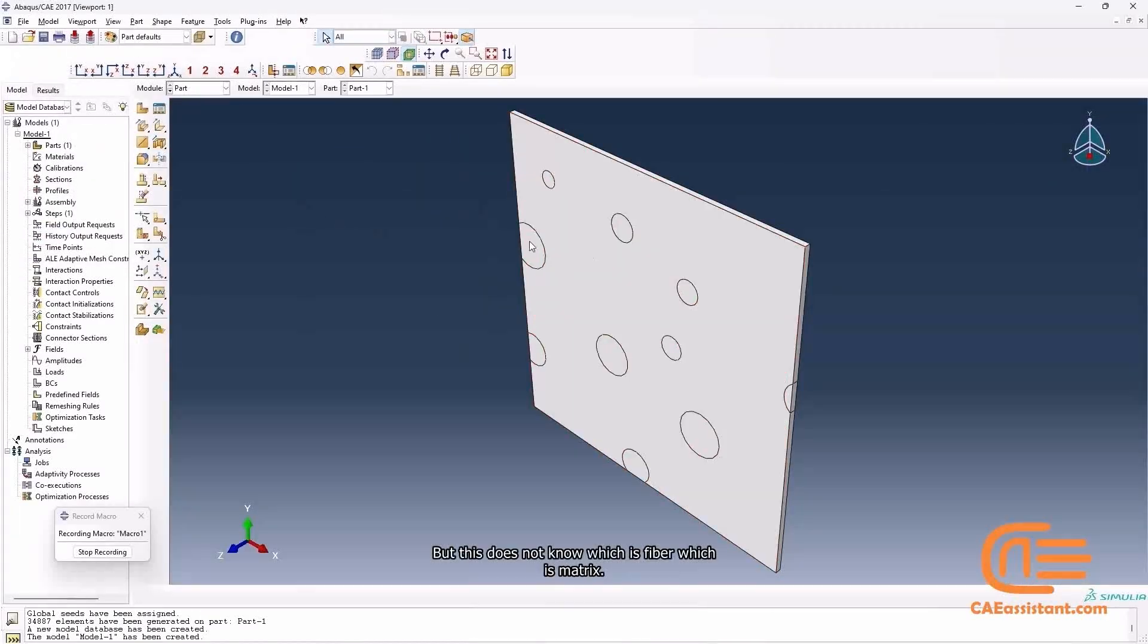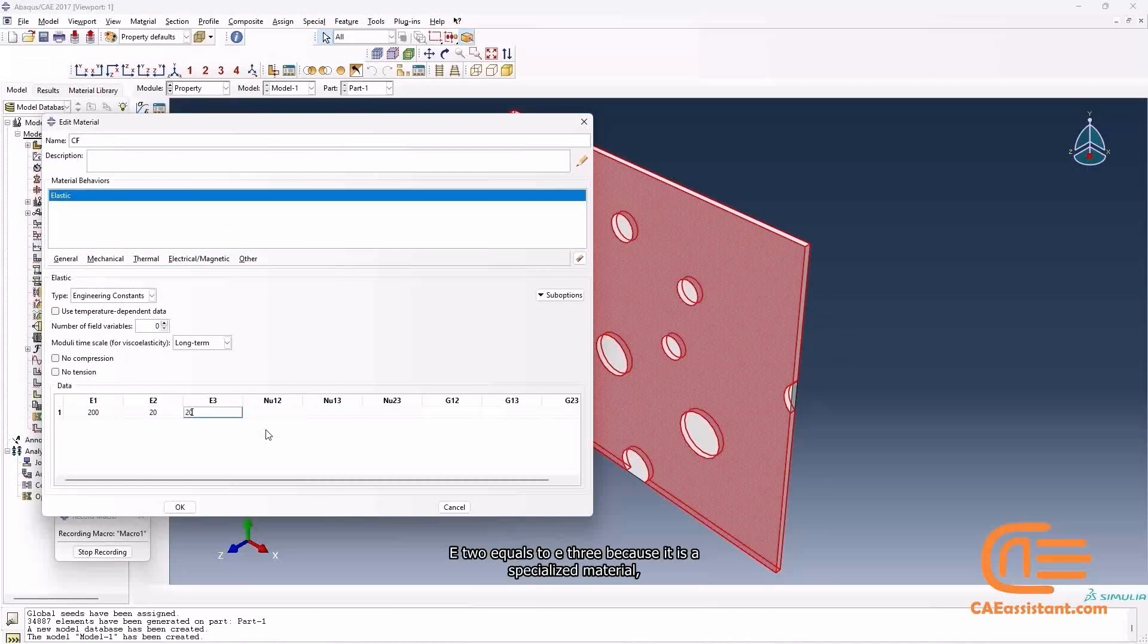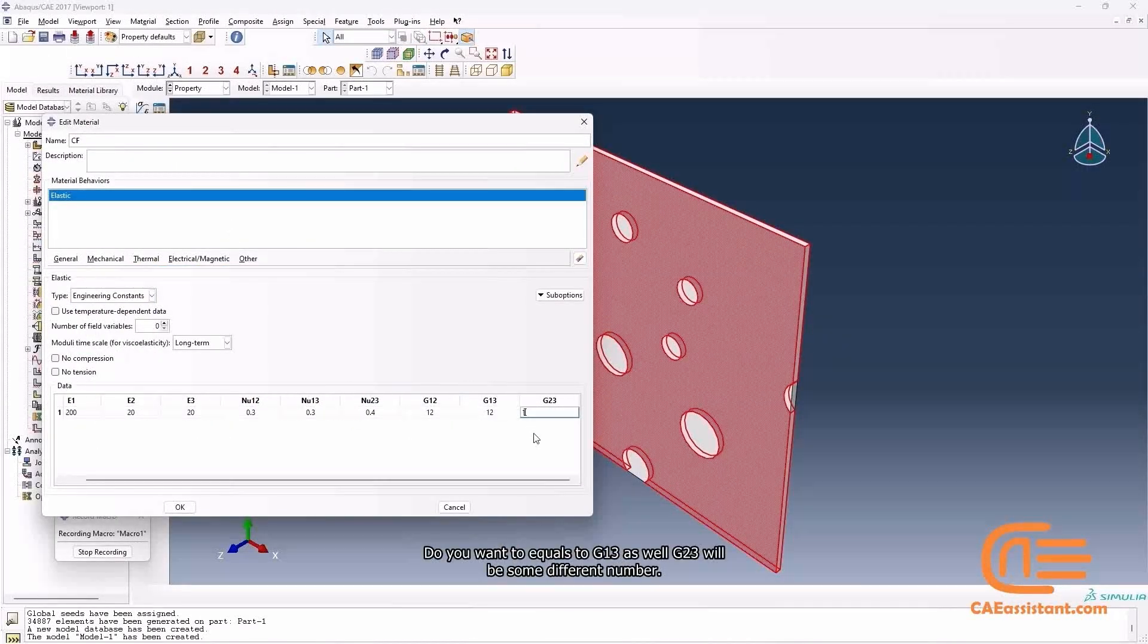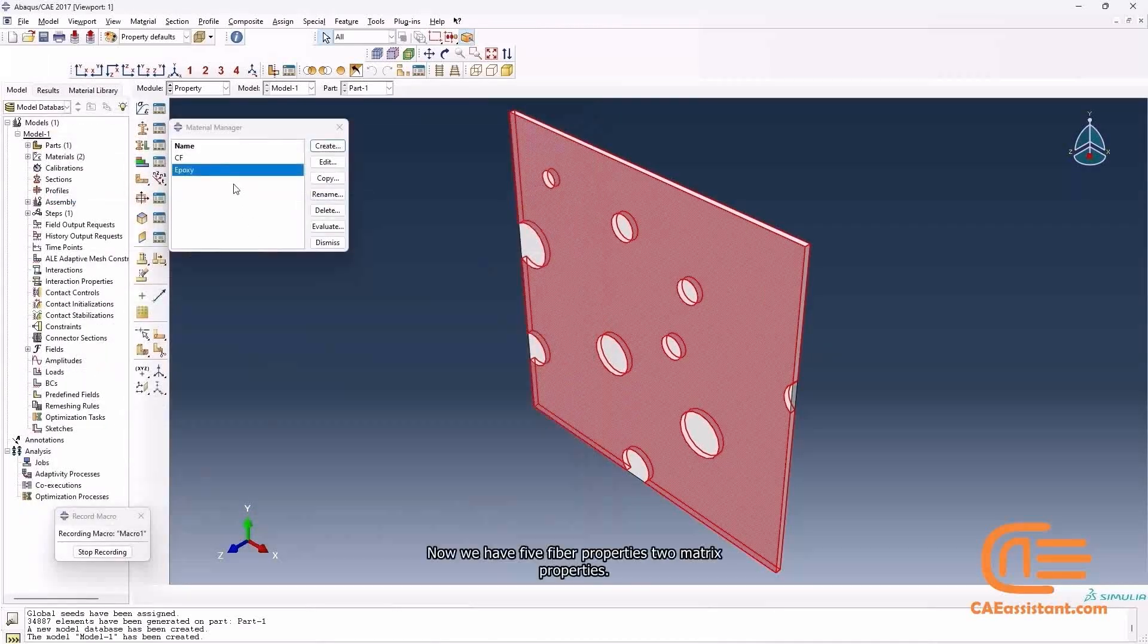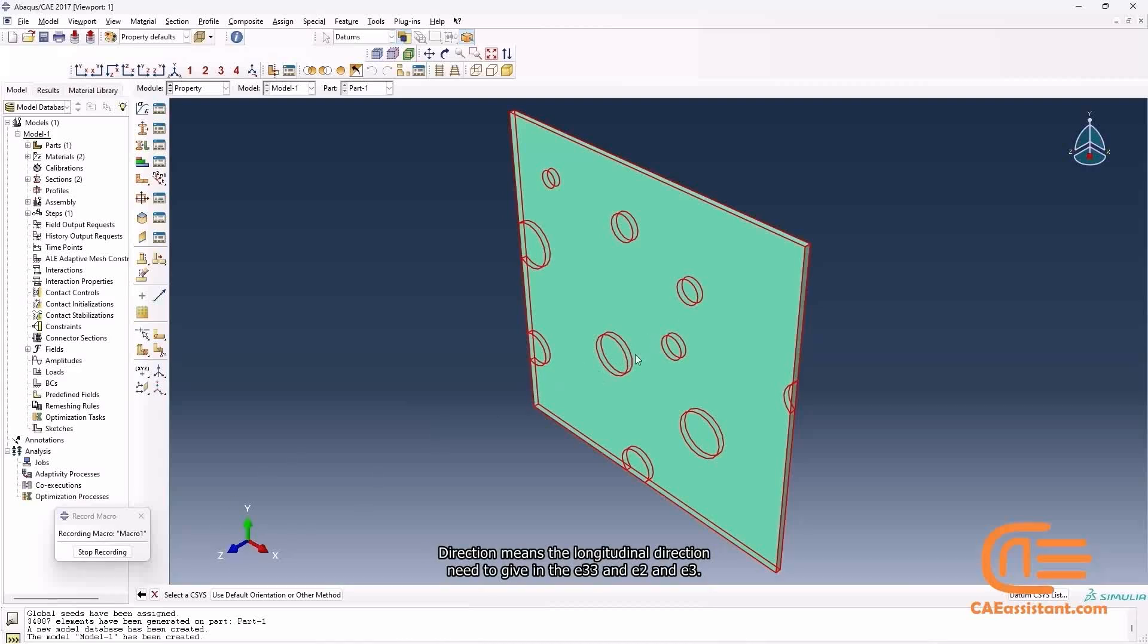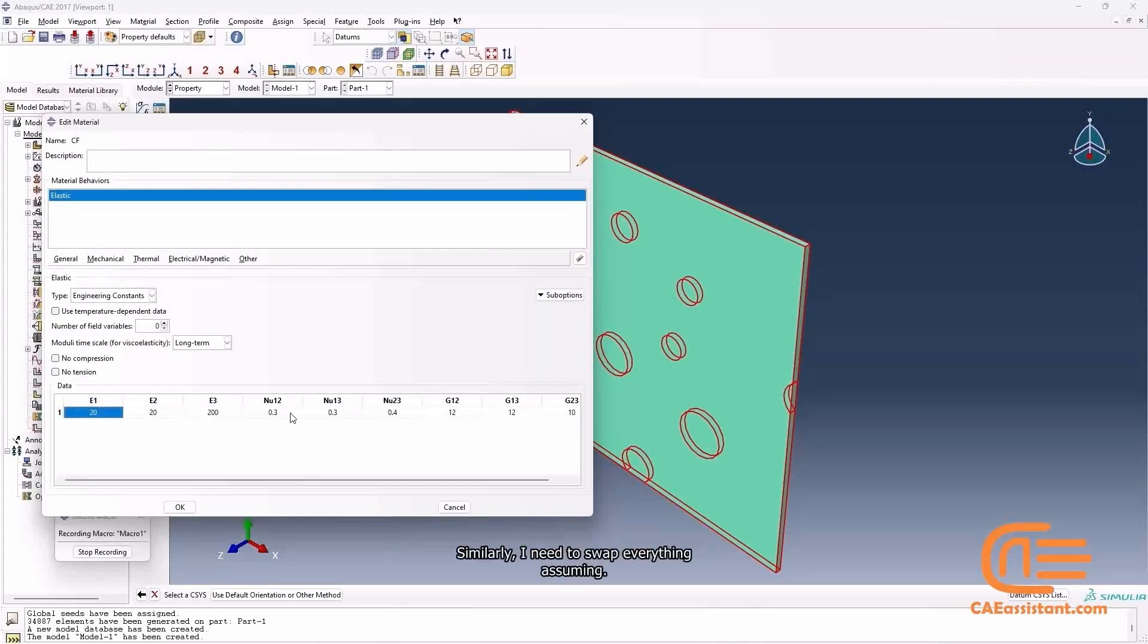The input for this model are fiber properties and matrix properties. These fiber properties are kept updating until the predicted lamina properties match with the experimental properties, which is the traditional process followed till now.